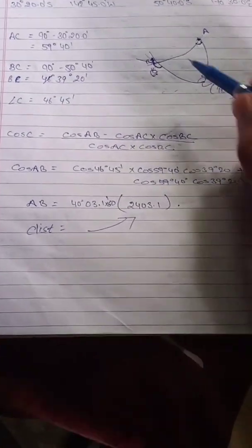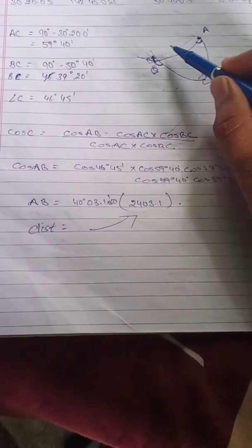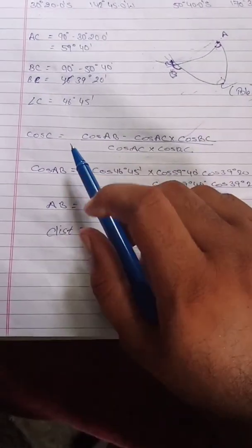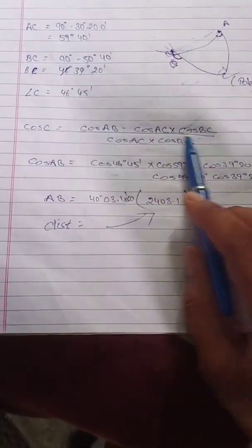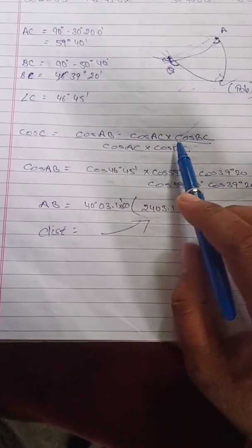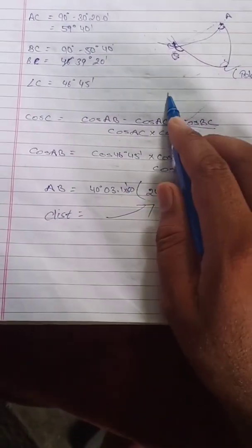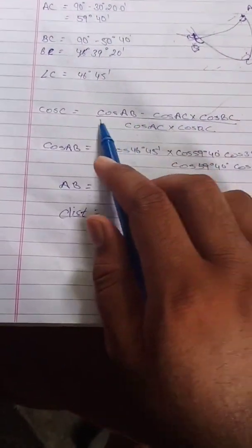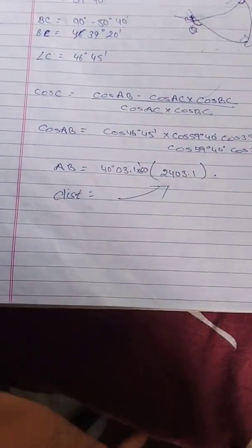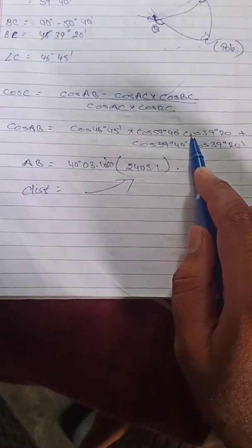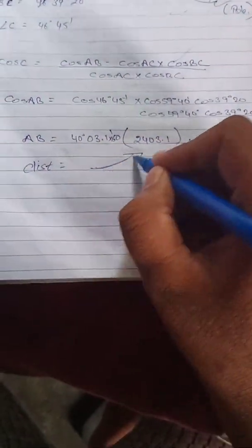To find the distance AB — the great circle distance — we use the cosine formula: cos(AB) = cos(AC)·cos(BC) + sin(AC)·sin(BC)·cos(C). After substituting values and solving, we get AB in degrees. Since distance is always in nautical miles, we multiply by 60 to convert. That gives us our great circle distance.